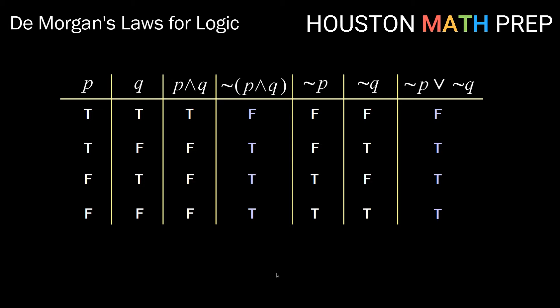What we notice here is that the columns for the negation of P and Q and for the statement not P or not Q have exactly the same combination of truth values. This means that the two statements are what we call logically equivalent, or you can think of as equal. So not P and Q is the same thing as not P or not Q.